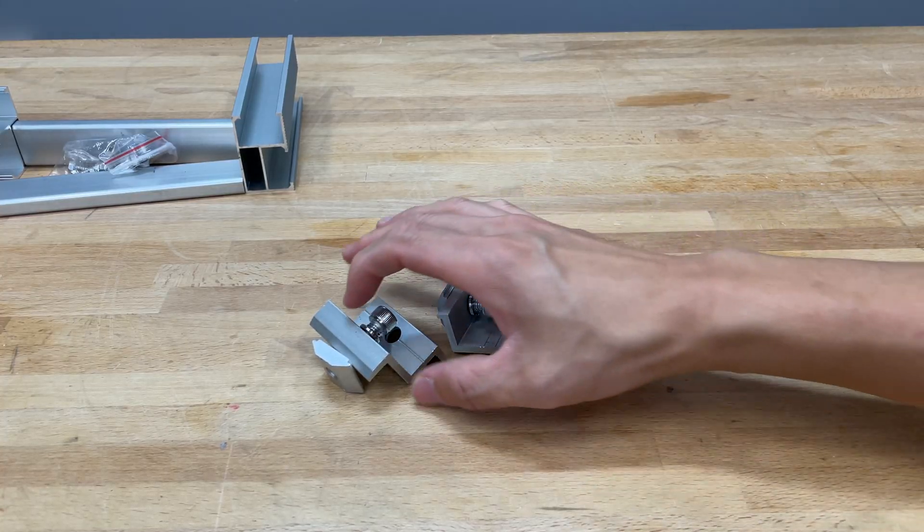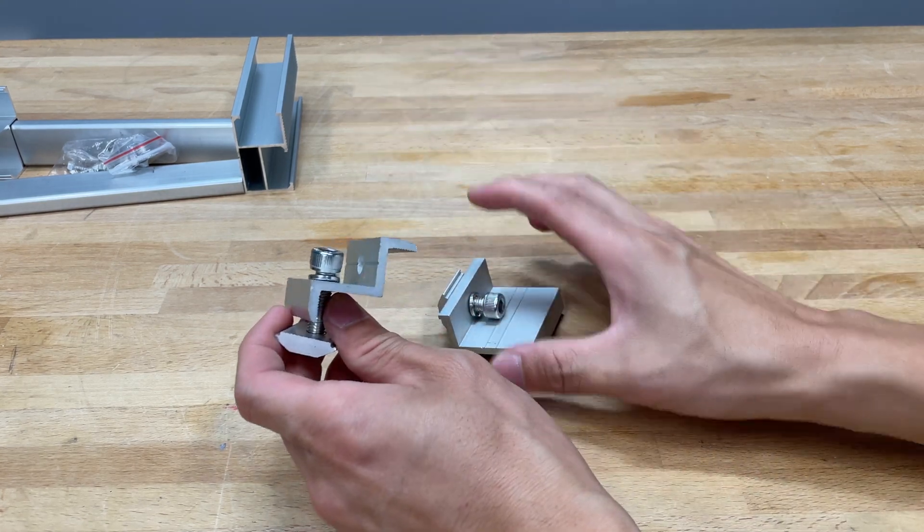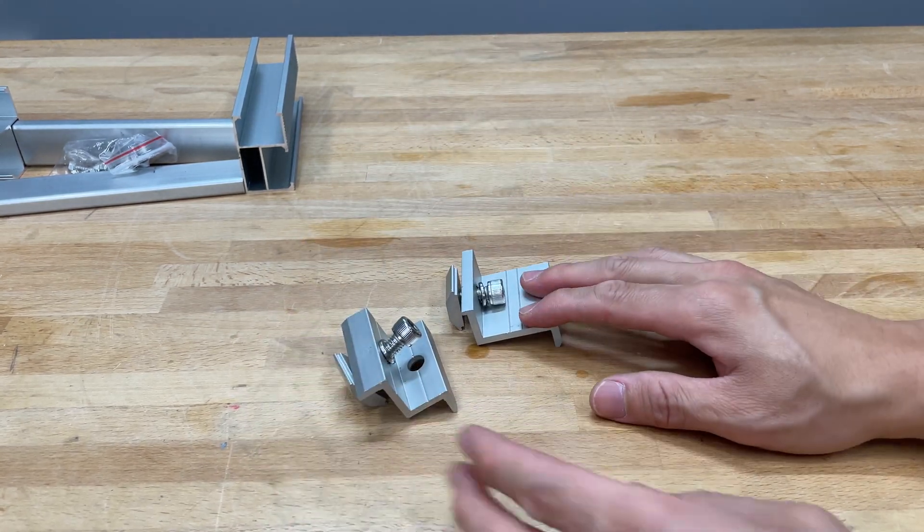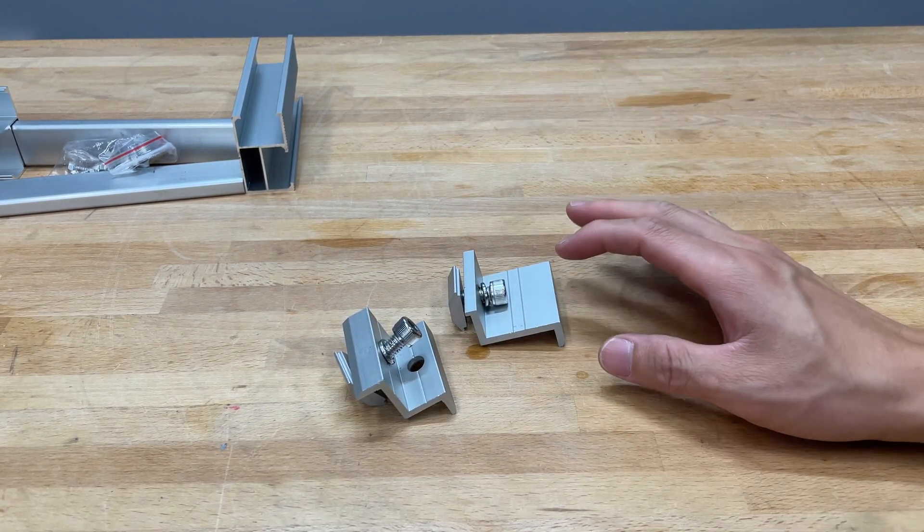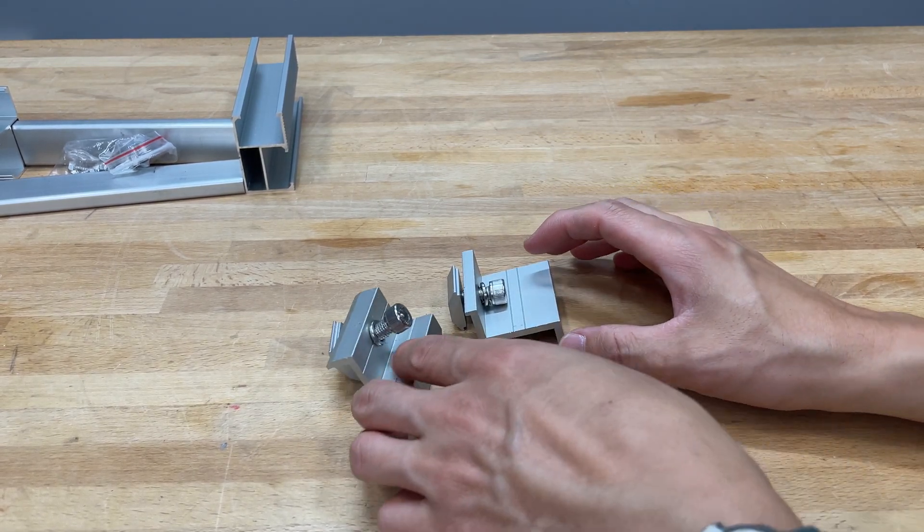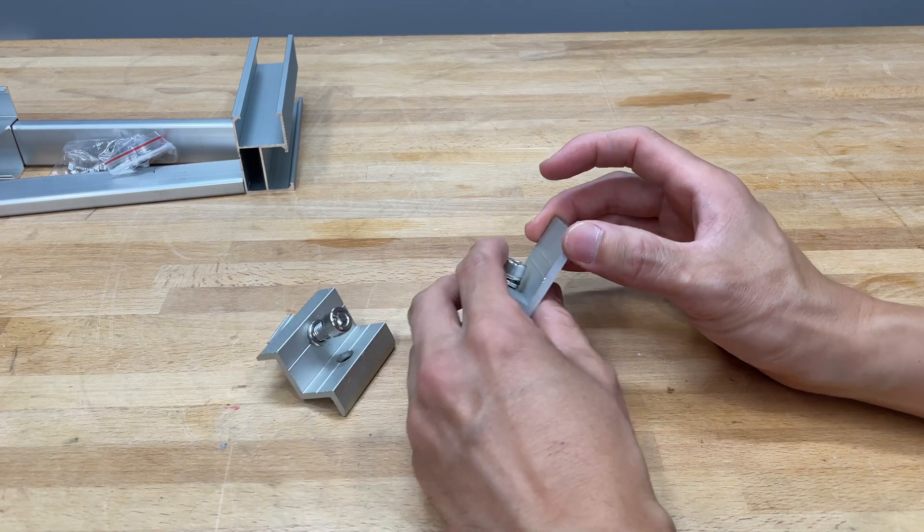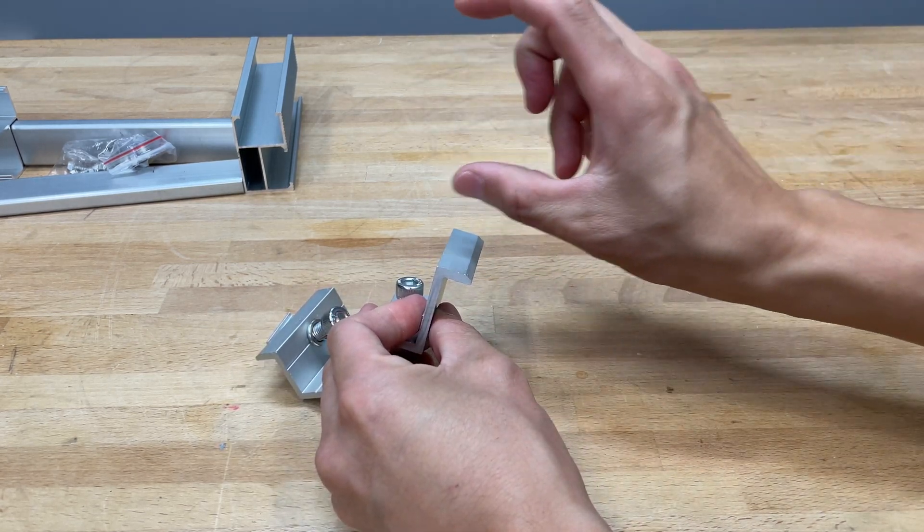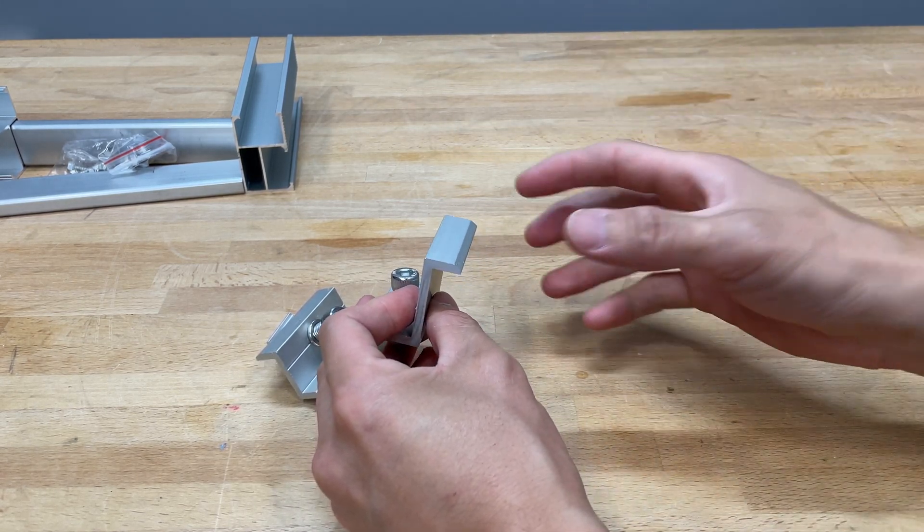These right here are the end clips, and I want to emphasize there's four of each one. Meaning there's four of these and four of these. So depending on your solar panel thickness, you're going to need to figure out which one you want to use. So there's four of them, mainly because you use two on each side at the end of the Bright Mount system. So it makes sense to be four.